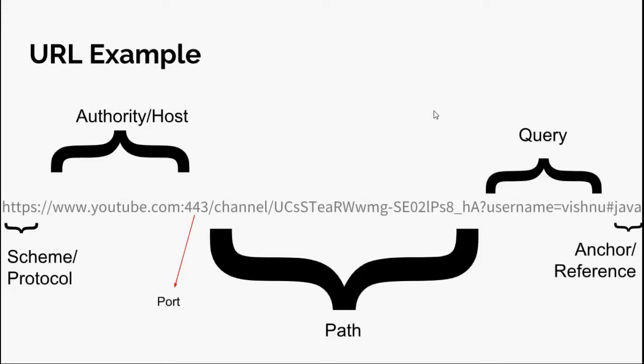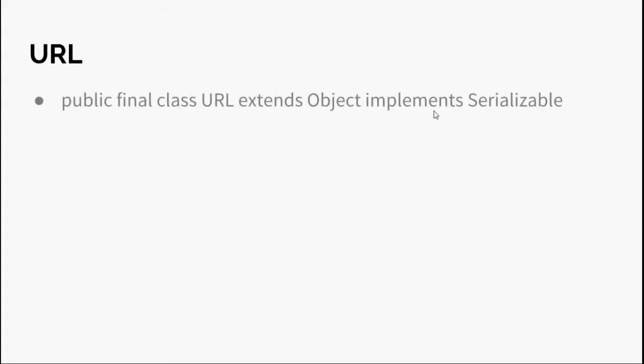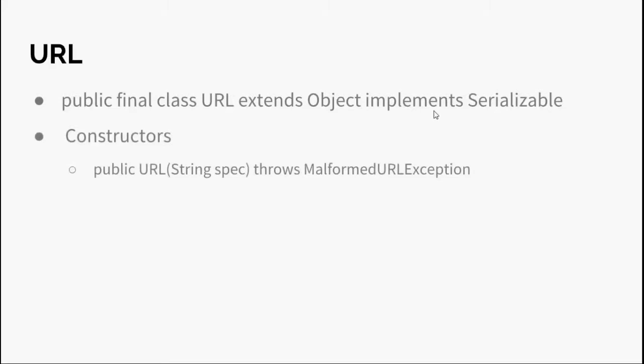Now let's look at the Java URL class. Its signature is: public final class URL extends Object implements Serializable. URL is a final class, so you cannot inherit it. The first constructor is public URL(String spec) throws MalformedURLException — it creates a URL object from a specified string. MalformedURLException is thrown if the protocol is invalid, the string is null, or the string has no meaning.